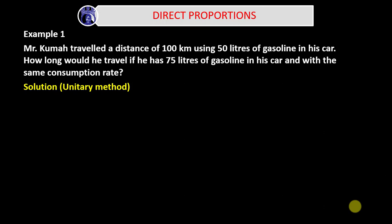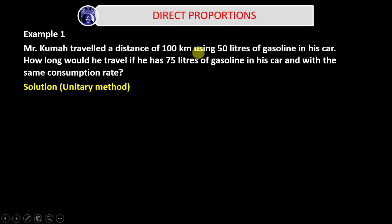Now let's consider the second approach — the Unitary method. In this method, you look at the question critically and find the quantity that has been provided in both scenarios. The distance is given in the first part along with the liters, but in the second scenario the distance is unknown while the liters are given. So since liters are given in both scenarios, you ask yourself: how much distance will the car cover in one liter?